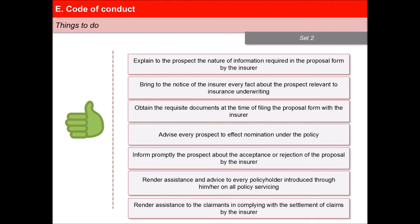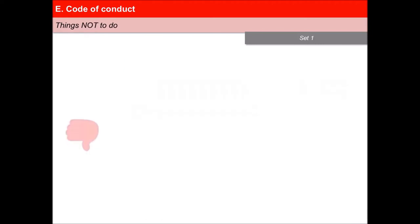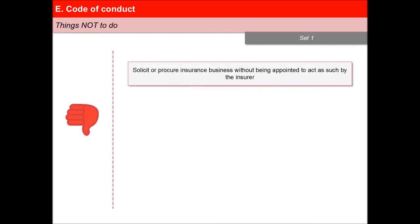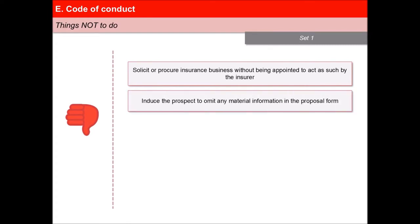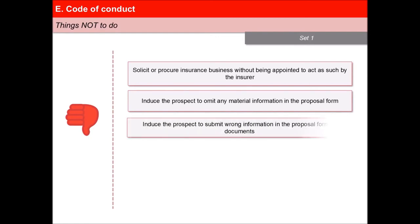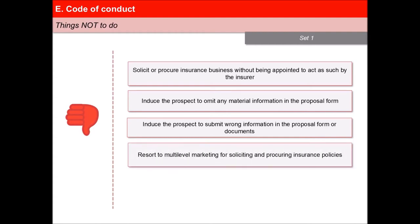The agent shall render necessary assistance to the policyholders or claimants or beneficiaries in complying with the requirements for settlement of claims by the insurer. The insurance agent should NOT solicit or procure insurance business without being appointed to act as such by the insurer, induce the prospect to omit any material information in the proposal form, induce the prospect to submit wrong information in the proposal form or documents, or resort to multi-level marketing for soliciting and procuring insurance.